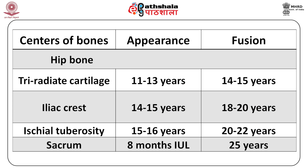For the hip bone, the triradiate cartilage ossification center appears at around 11 to 13 years and fuses at 14 to 15 years. The iliac crest appears at 14 to 15 years and fuses at 18 to 20 years. The ischial tuberosity appears at 15 to 16 years and fuses at 20 to 22 years. For the sacrum, the center of ossification appears at eight months of intrauterine life, and all five segments of the sacrum fuse with each other by the end of 25 years.